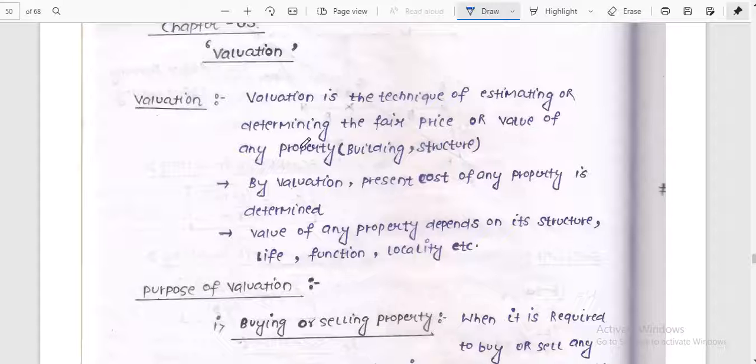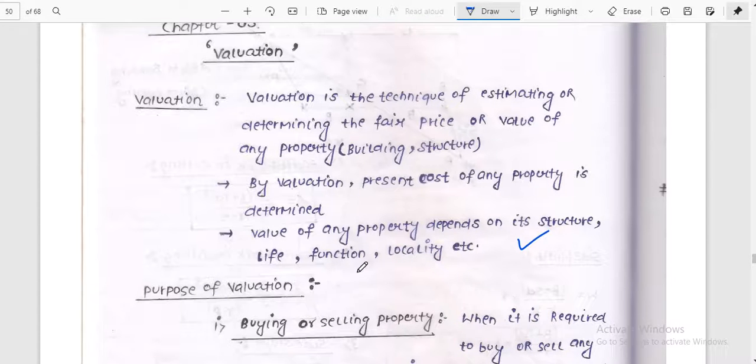Chapter 5 is valuation. Valuation is basically the technique of estimating or determining the fair price or value of the property or building structures. By valuation, present cost of any property is determined. Value of any property depends on its structure, life, function, locality, etc.